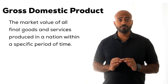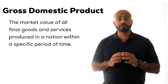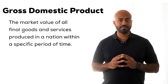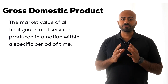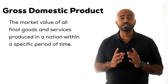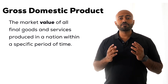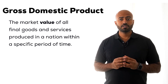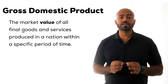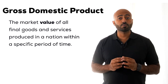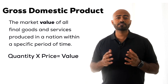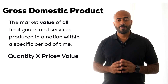The definition of gross domestic product is the market value of all final goods and services produced in a nation within a specific period of time. First, GDP measures the value of what is produced, so it is not enough to measure quantity alone. Just measuring quantities will lead to inaccurate analysis. For GDP, we are interested in measuring value of production, which means we multiply quantities produced by the prices of those goods and services.